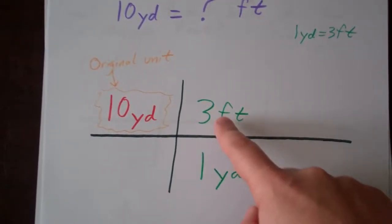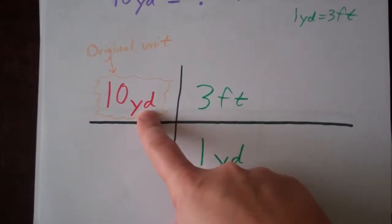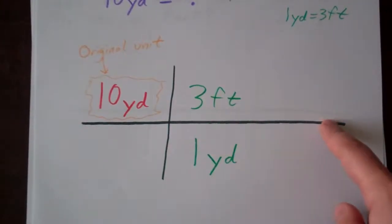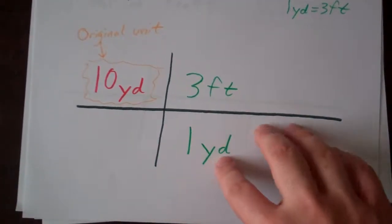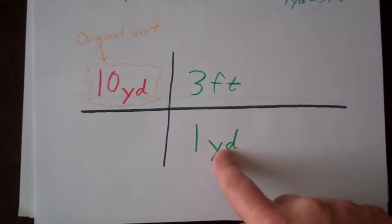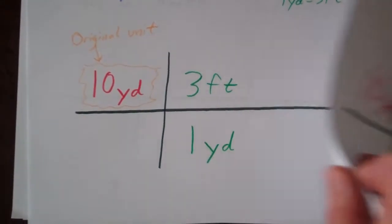When we write this, we can't just write 1 yard and 3 feet. We have to look at what our units are here. This is yards. This is like our numerator of a fraction. Below it, we have our denominator, so we're going to put yards down here also. Why are we doing that? Let's see what happens next.